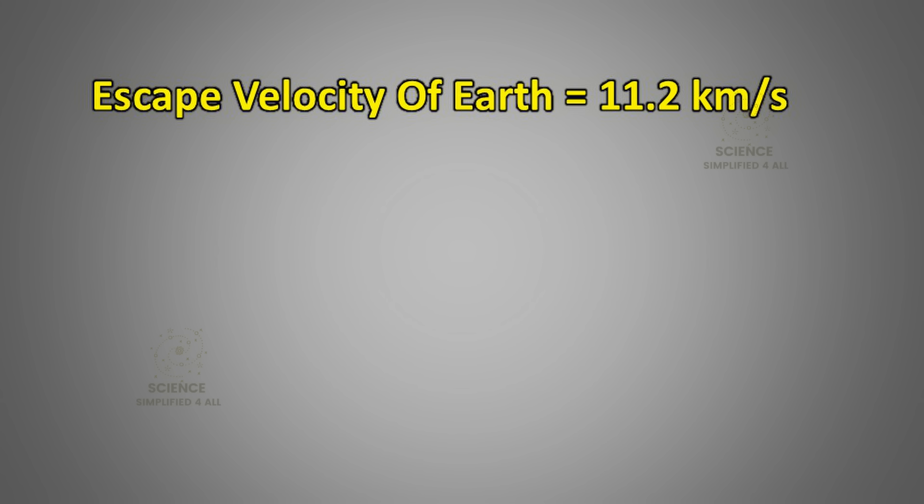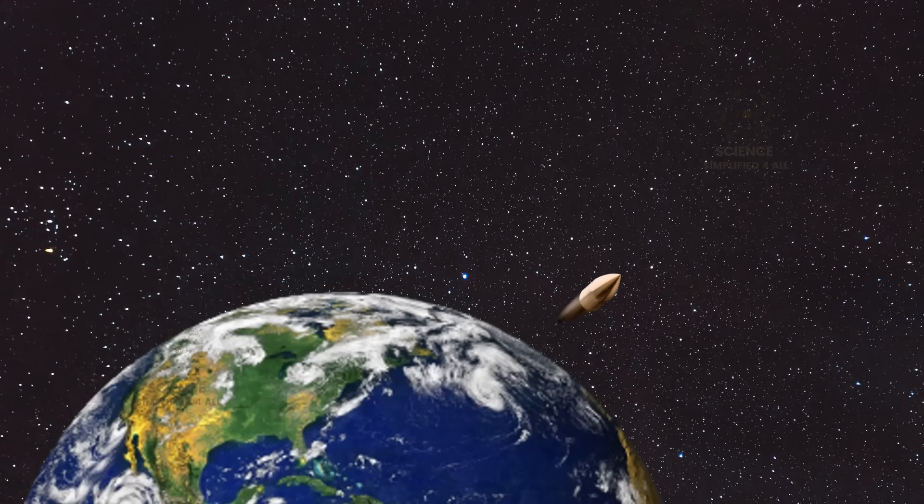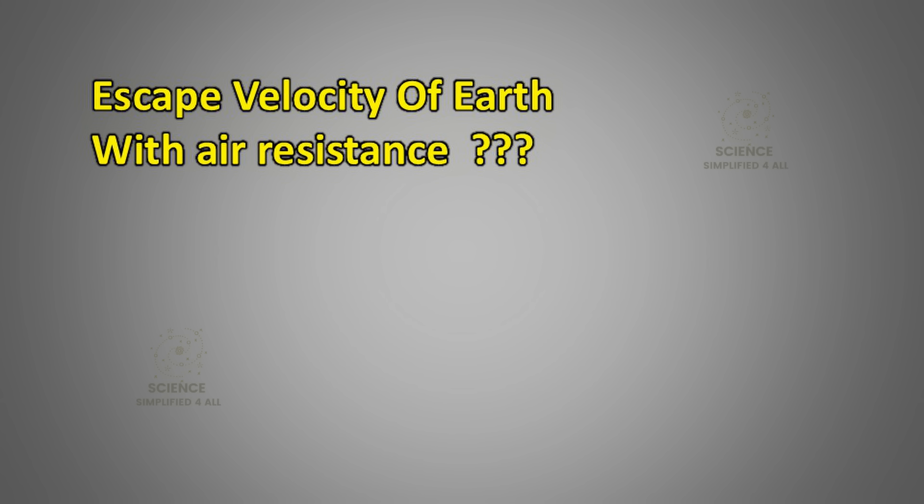But here is an interesting point. That 11.2 km per second value does not account for air resistance. In real life, an object trying to leave Earth must go even faster, depending on its shape and the drag it faces. And since air resistance is different for different shapes, there is no single fixed number for real escape velocity. It changes based on the object.